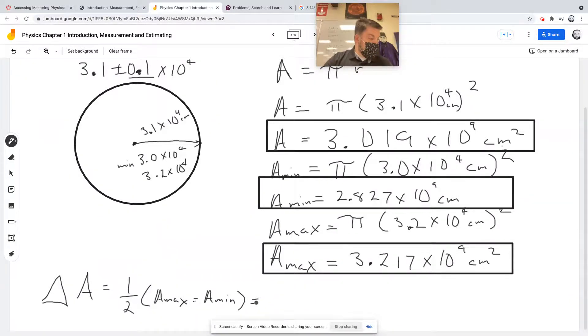So that's 3.217 minus 2.827, multiplied by one half times 10 to the 9th. The uncertainty is 0.195 times 10 to the 9th centimeters squared.